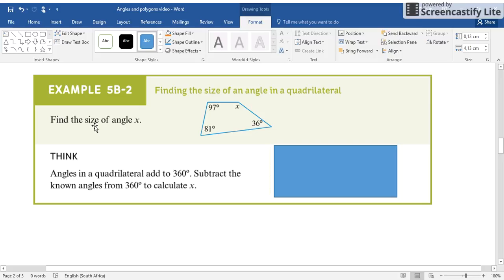Okay, so how do you find the size of angle X? So angles in a quadrilateral add up to 360. So you subtract the known angles from 360 to calculate X.